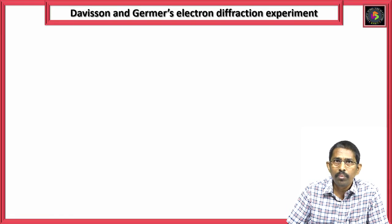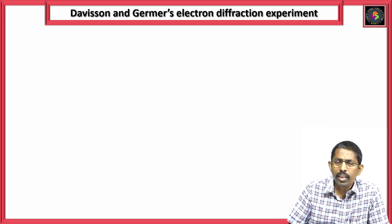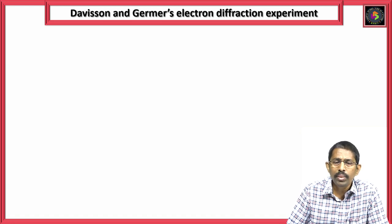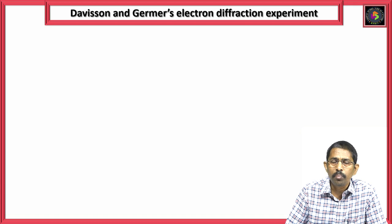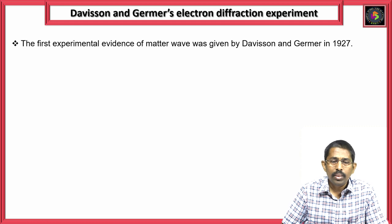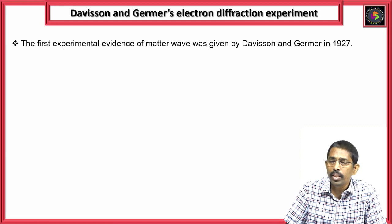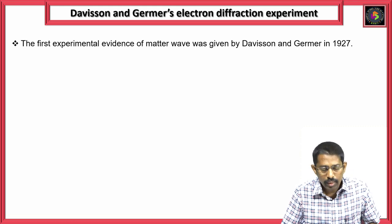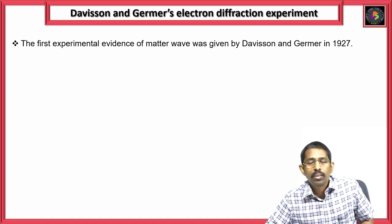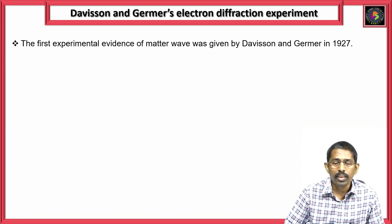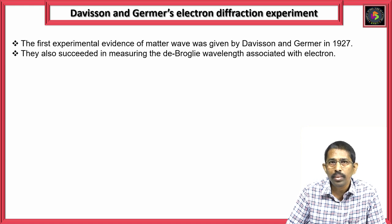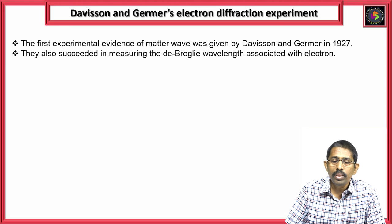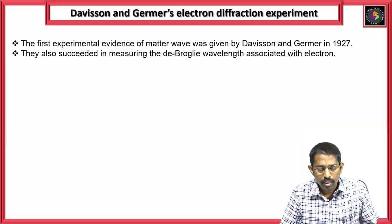In the previous class you have seen matter waves — what are matter waves — and these matter waves can be demonstrated experimentally using an experiment called the Davisson and Germer experiment. This was the first evidence of matter waves, given by Davisson and Germer in the year 1927. They also succeeded in measuring the de Broglie wave associated with the electrons, demonstrating that electrons have wave nature.